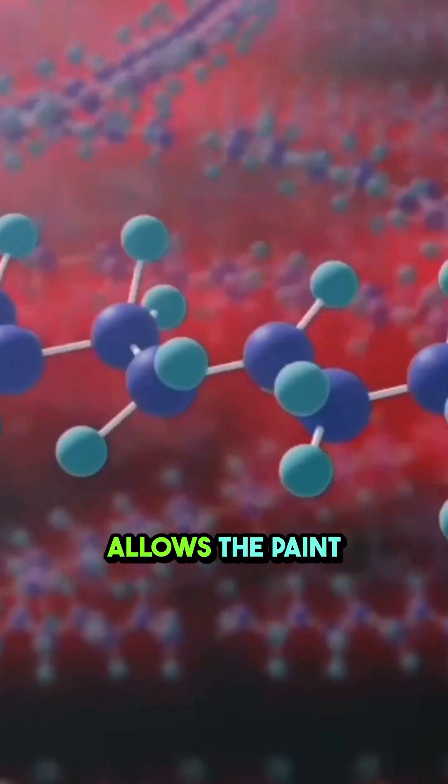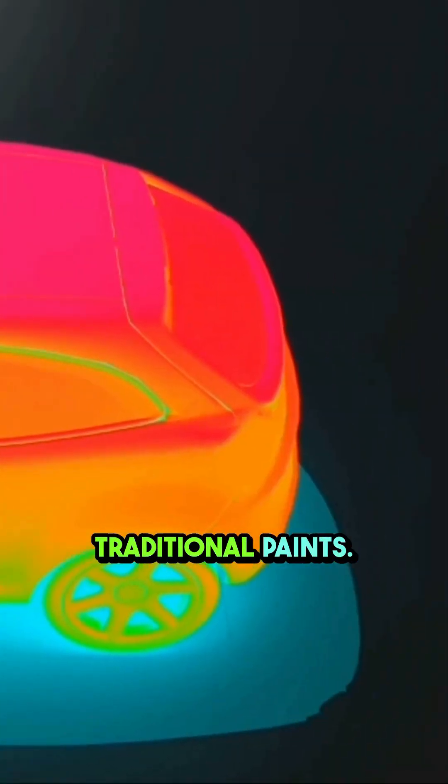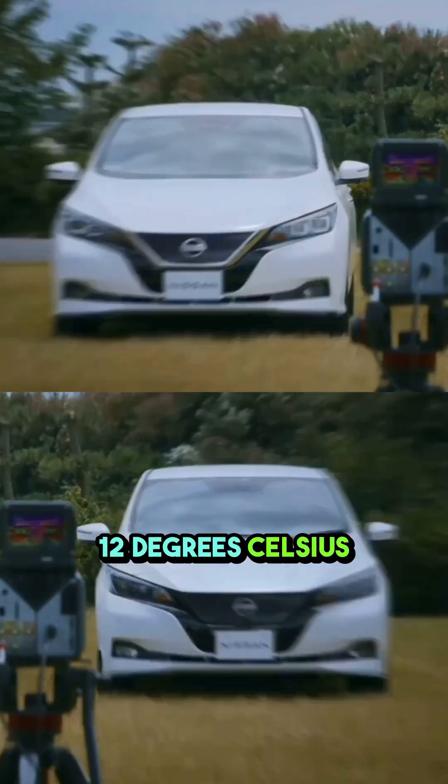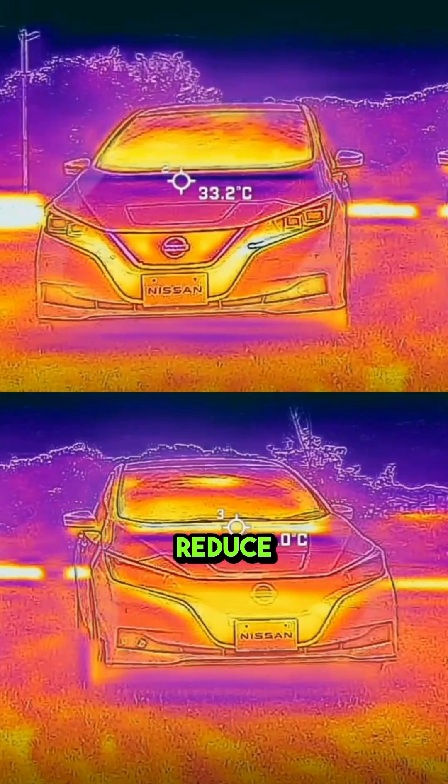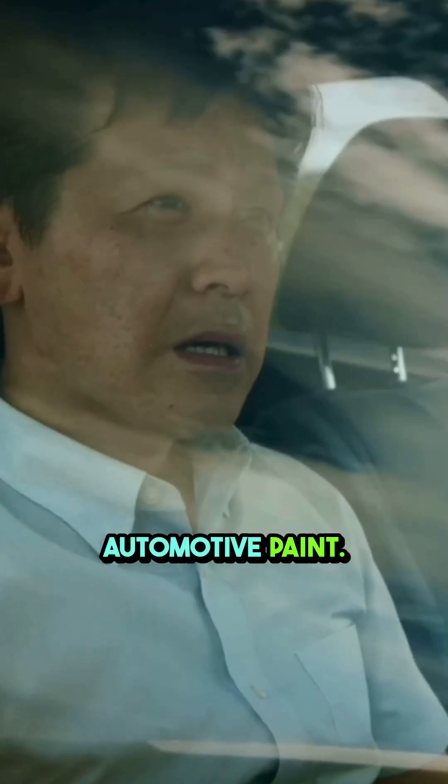This process allows the paint to dissipate heat more efficiently than traditional paints. This cool paint delivers up to 12 degrees Celsius cooler exterior surfaces and reduces cabin temperature by 5 degrees Celsius compared to traditional automotive paint.